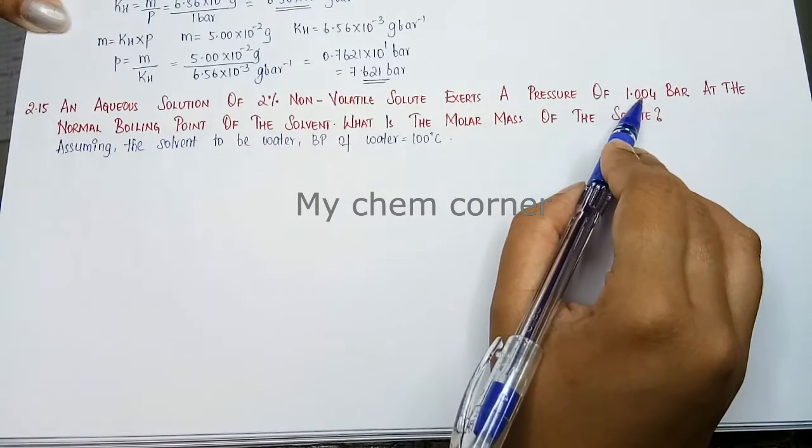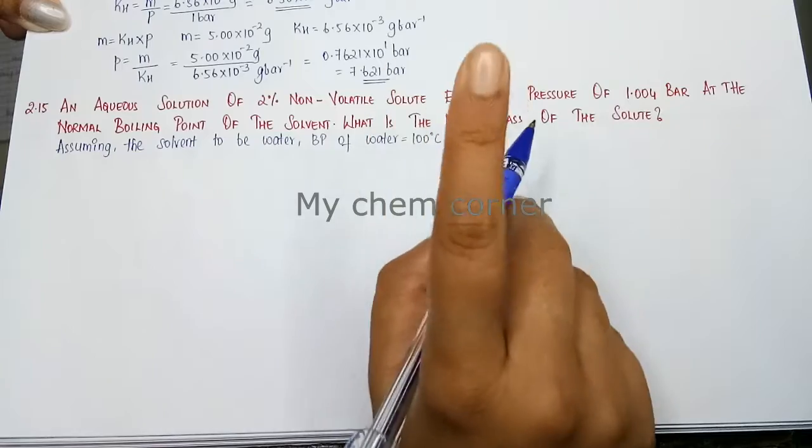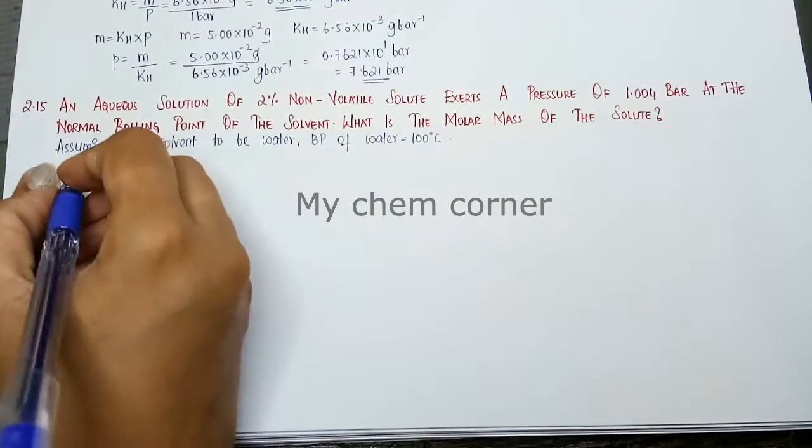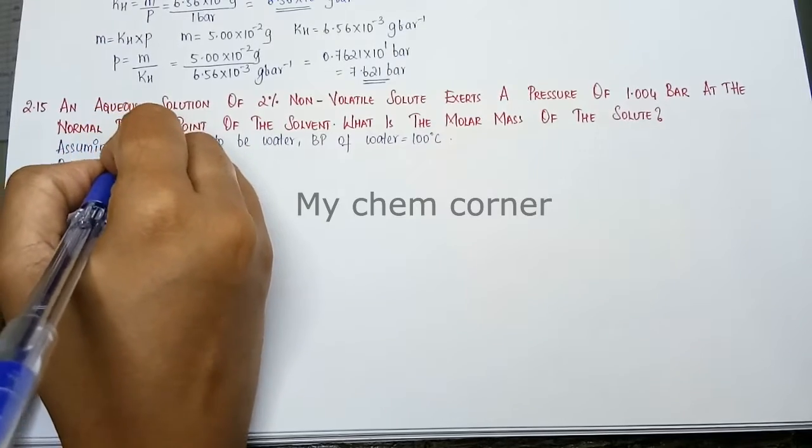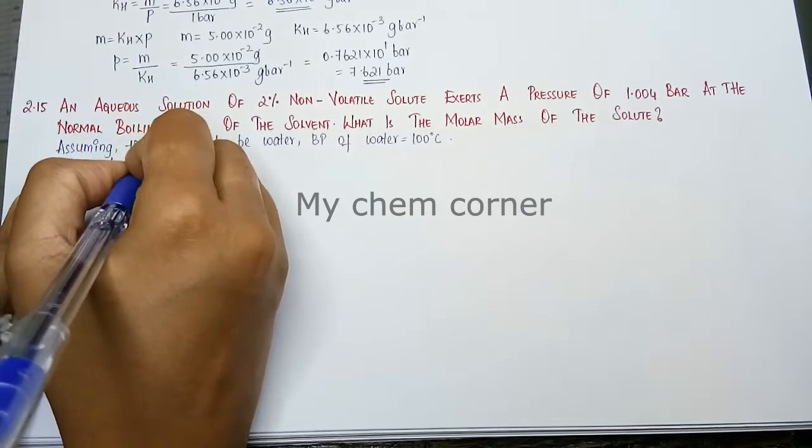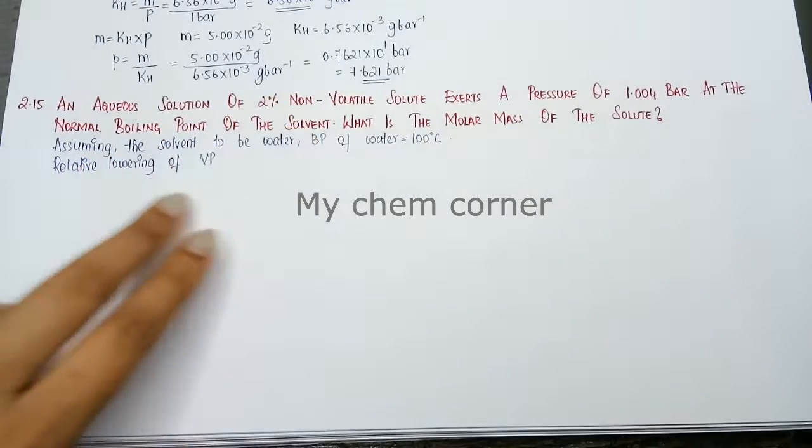Now because bar is present, pressure is present and all of that, we need to calculate molar mass. One simple way where we can calculate is from relative lowering of vapor pressure. The equation for this, let's write the equation for this now.